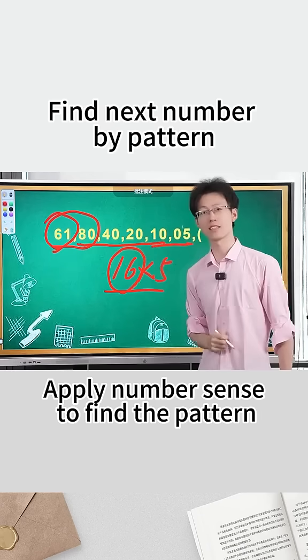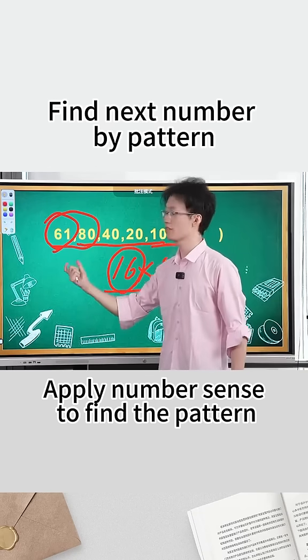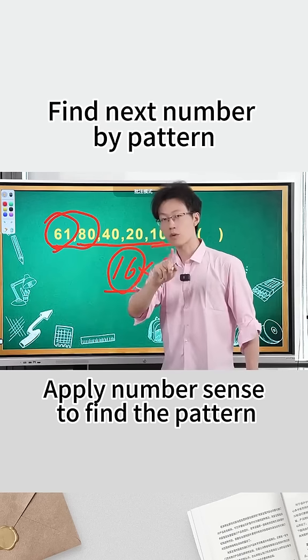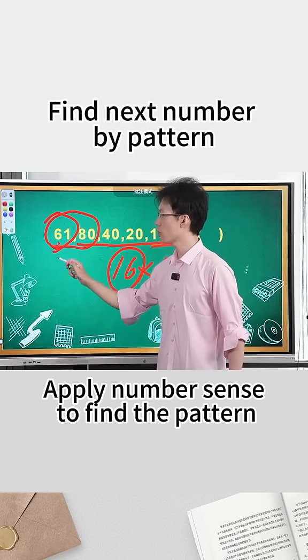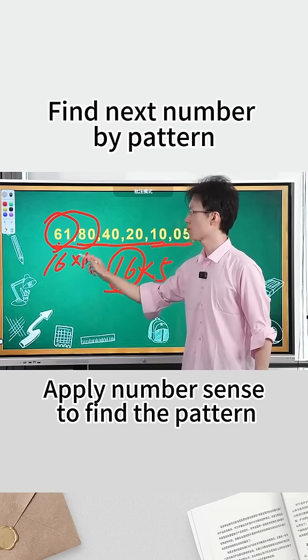So if you decompose it, 16 and 61 can be related. These two numbers are related. What is the relationship? It is to reverse it. So we can refine this rule: reverse the first number and multiply it by 5. Reverse 61 to become 16. Reverse 16 and multiply it by 5, which equals 80.